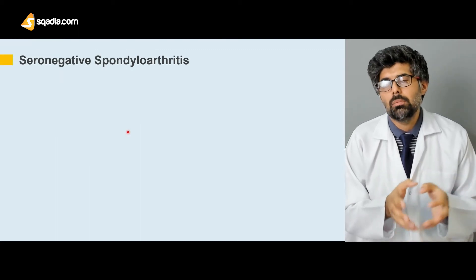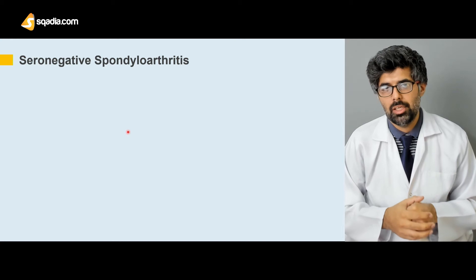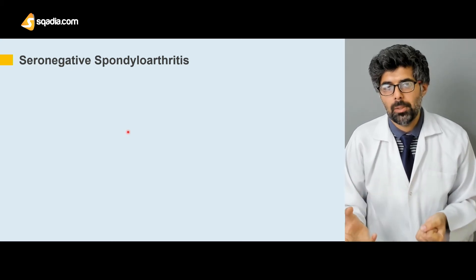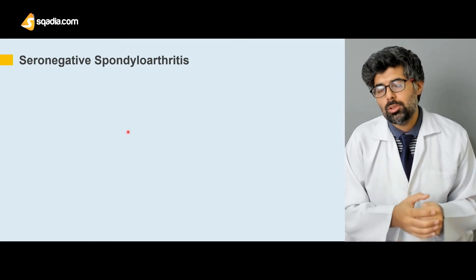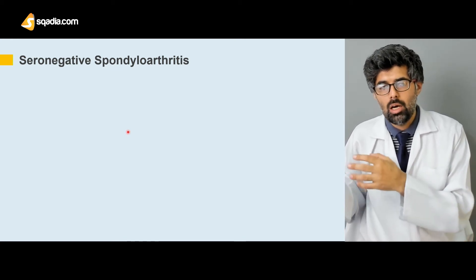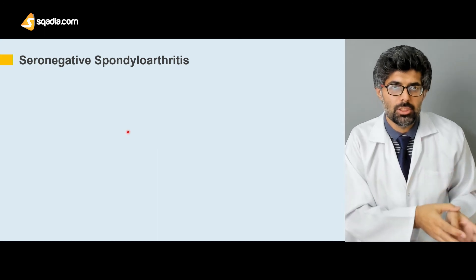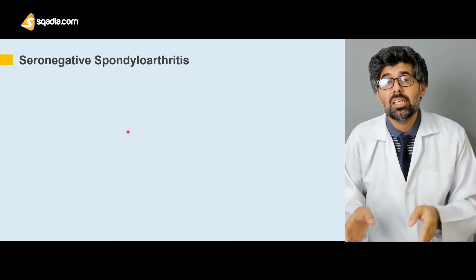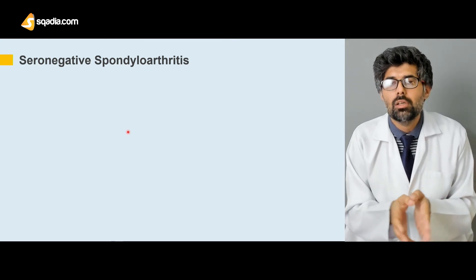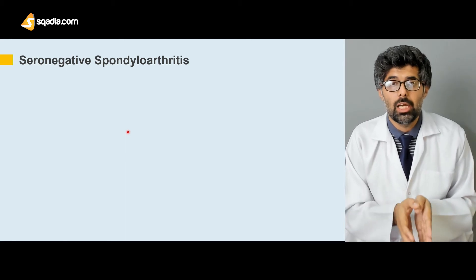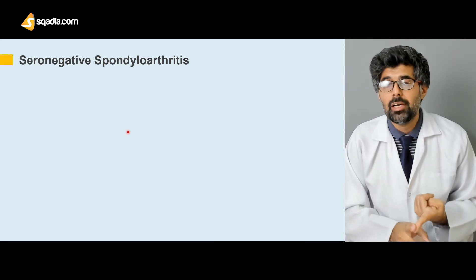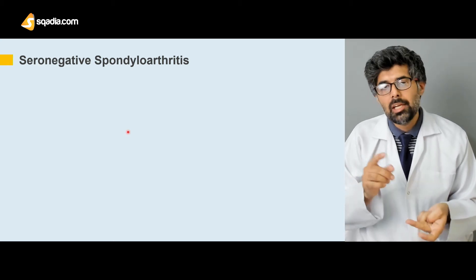Now there's a certain term known as the seronegative spondyloarthritis. Seronegative means that there is something missing in the blood or the serum. We all know that rheumatoid arthritis is a very severe disease with a huge amount of both epidemiological and etiological implications. This disease, rheumatoid arthritis, must be differentiated from other diseases such as spondyloarthritis because they both share the same symptoms and symptoms sometimes overlap. A seronegative spondyloarthritis is the one which does not have the rheumatoid factor, which is present in rheumatoid arthritis.